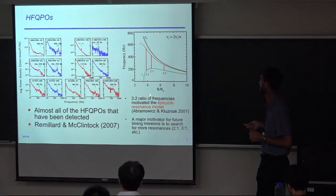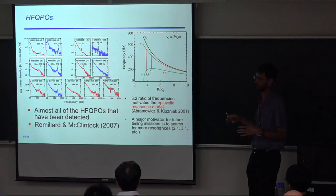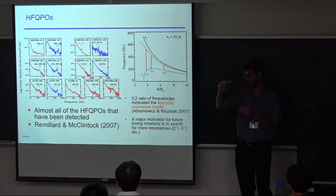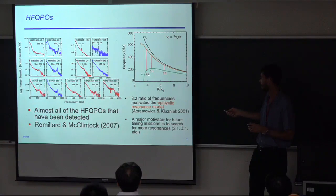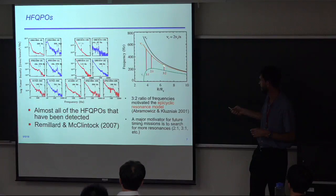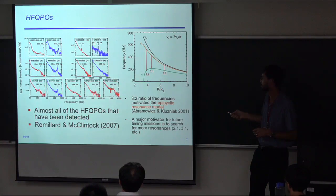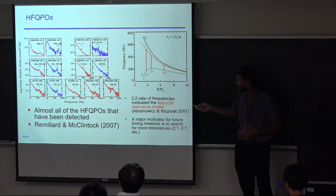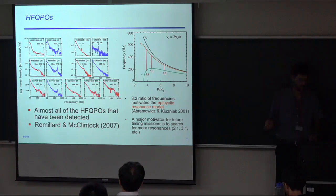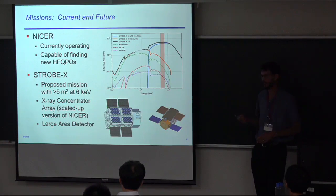In the Epicyclic Resonance Model, the Keplerian frequency and the radial and vertical epicyclic frequencies — when you perturb a particle in the Z or R direction, it oscillates at these frequencies. These tend to be in 3:2 ratios at certain radii, and the idea is that you might be able to excite resonances and produce QPOs. However, these power spectra have a lot of noise even with high RXTE count rates because these are very faint signals. That's why we need higher effective areas to make more measurements and do detailed measurements of high-frequency QPOs.